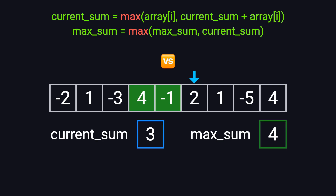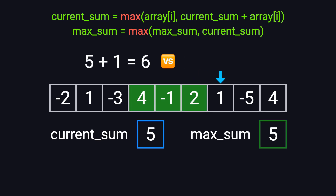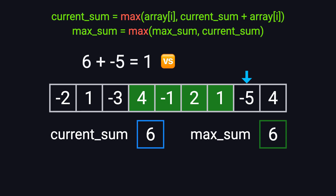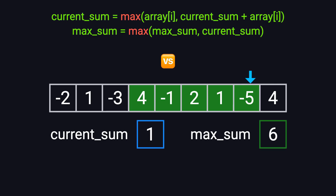Next number, 2. 3 + 2 = 5. Better than 2 alone, so continue. current_sum becomes 5, max_sum updates to 5. Then comes 1. 5 + 1 = 6. That's better than 1, so keep going. current_sum is 6, max_sum becomes 6. Next number is -5. 6 + (-5) = 1. Still better than -5, so we keep going. current_sum becomes 1, max_sum stays at 6. Last number, 4. 1 + 4 = 5. Better than just 4, so we continue. current_sum becomes 5, but max_sum remains 6.